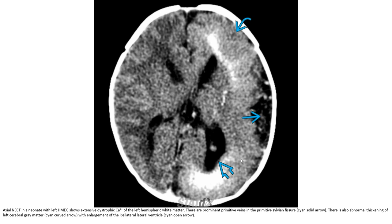This is the axial non-enhanced CT in a normal neonate, showing extensive dystrophic calcification of the left hemisphere white matter. There is a prominent primitive vein and primitive Sylvian fissure. There is also abnormal left cerebral gray matter within a large ipsilateral lateral ventricle.